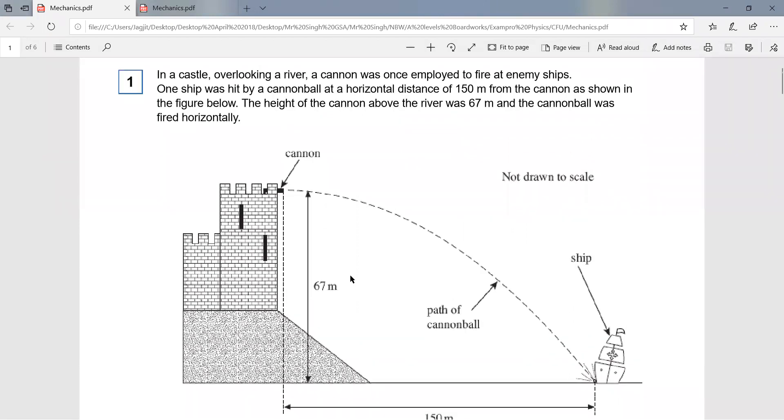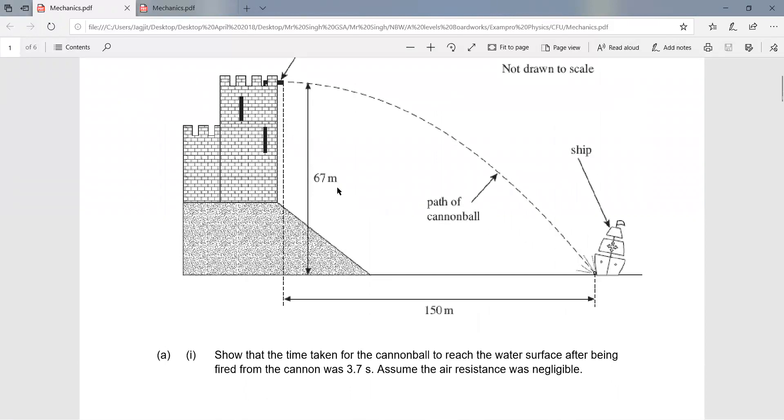The height of the cannon above the river was 67 meters, and the cannonball was fired horizontally.